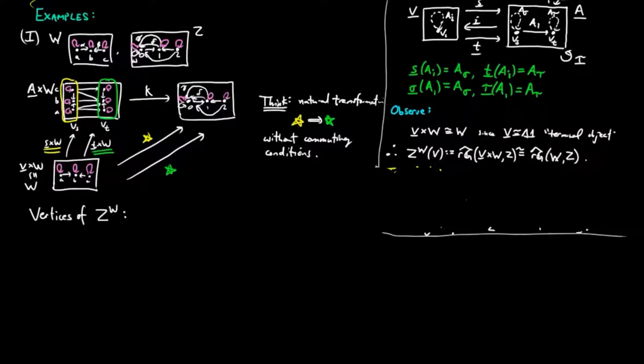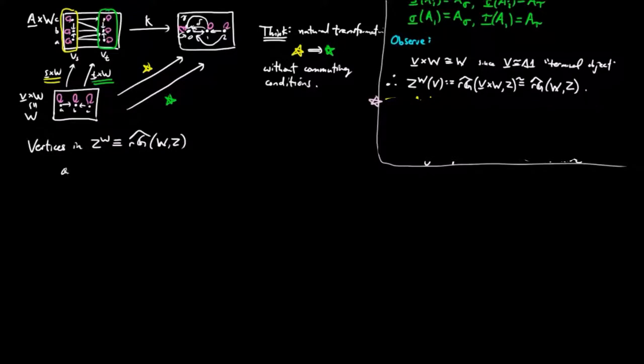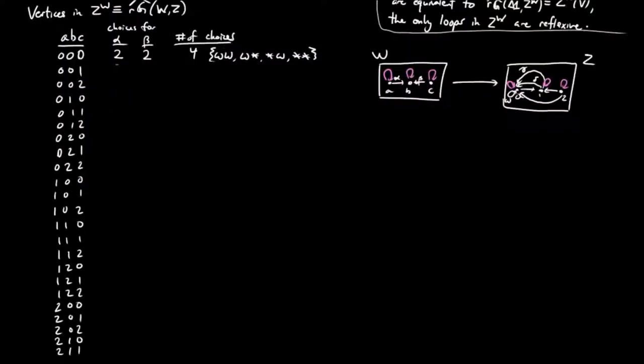The vertices of Z to the W are the reflexive graph morphisms. We will use brute force to determine which assignment of vertices lift to morphisms. There are 3 to the 3, or 27, different assignments on vertices from A, B, C to 0, 1, 2.